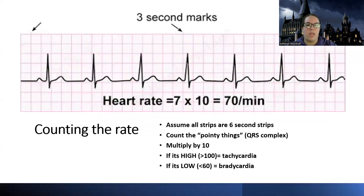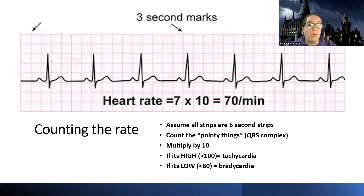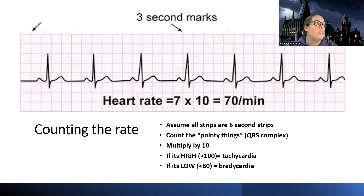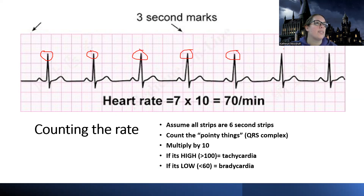So the first thing is counting the heart rate. I've already shown you how to do this in most of these videos, but I'm going to go through it again — especially if this is where you're starting. You want to know your rate because it tells you a lot about the rhythm. The way we do it — there are multiple ways, but the simplest way — is to go through and count these pointy things at the top. Assume every strip on an exam is going to be a six-second strip.